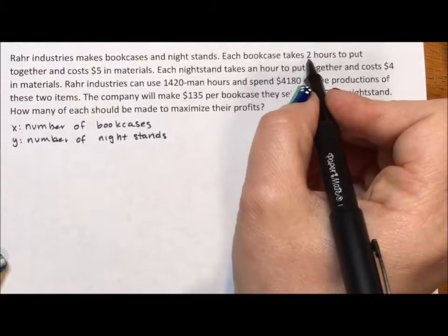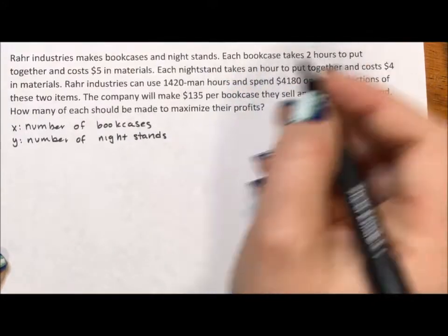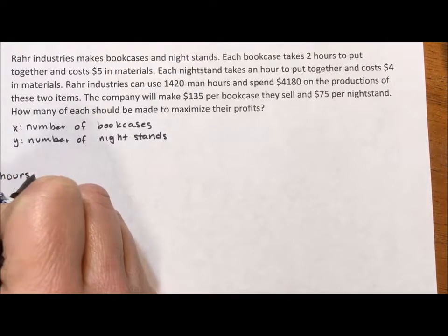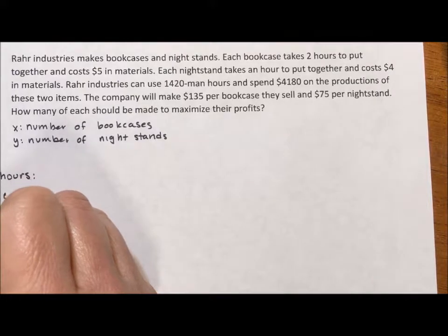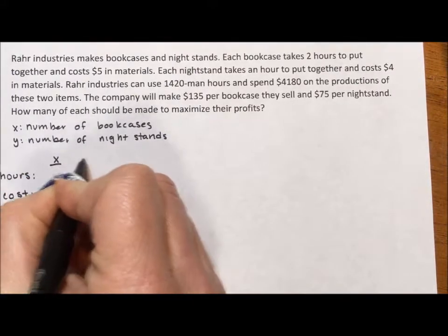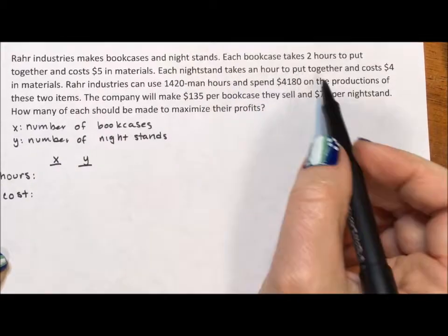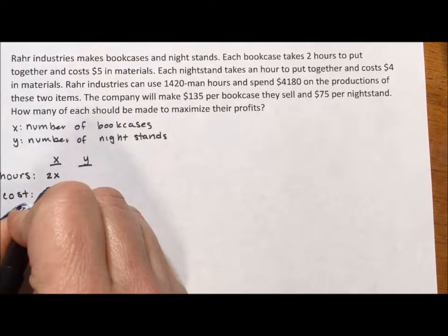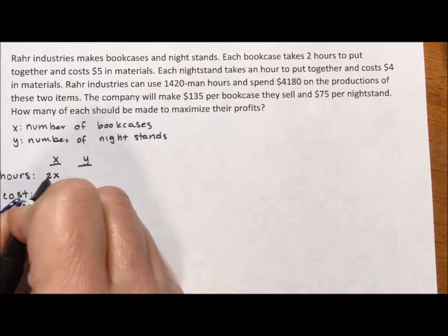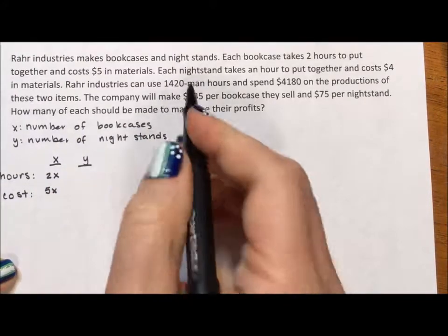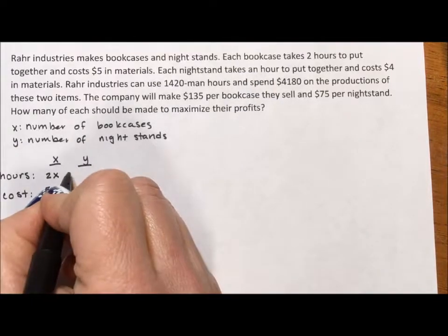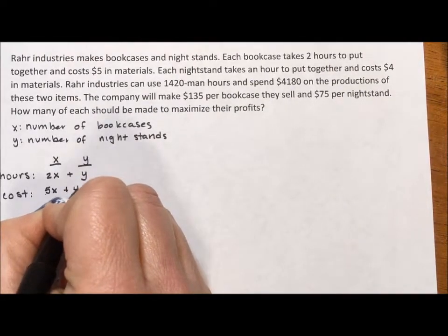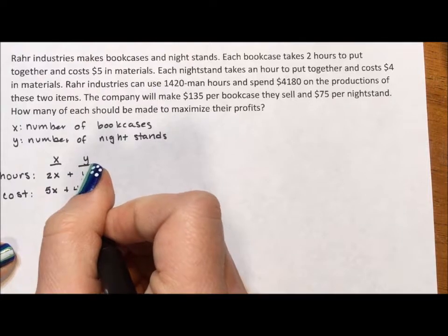So it looks like the conditions on making the bookcases and the nightstands, the first condition is the number of hours, and the second is the cost of materials. Each bookcase takes two hours, so that's 2x, and costs five dollars in material, that's 5x. Each x is a bookcase. It's two hours per bookcase, five dollars per bookcase. Each nightstand takes an hour, so that's plus 1y to put together and four dollars, so plus 4y for the cost per nightstand.